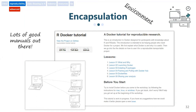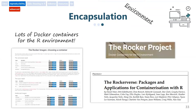There are a lot of good manuals to use Docker with R. This one was created by the R OpenSci community. If you're open to the idea, this manual will go through each step and lead you the way. There are also many different containers designed for the R environment, created and maintained by the Rocker project.